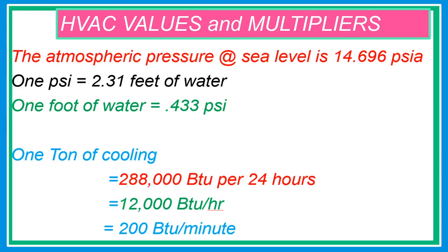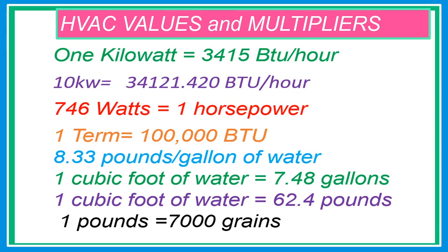HVAC values and multipliers: The atmospheric pressure at sea level is 14.696 PSIA, or pressure per square inch absolute. 1 PSI equals 2.31 feet of water. 1 foot of water equals 0.33 PSI. 1 ton of cooling is 288,000 BTU per 24 hours, also equal to 12,000 BTU per hour and 200 BTU per minute. 1 kilowatt equals 3,415 BTU per hour. 10 kilowatts equals 34,121 BTU per hour. 746 watts equals 1 horsepower. 1 therm equals 100,000 BTU. 8.33 pounds per gallon of water. 1 cubic foot of water equals 7.48 gallons. 1 cubic foot of water equals 62.4 pounds. 1 pound equals 7,000 grains.